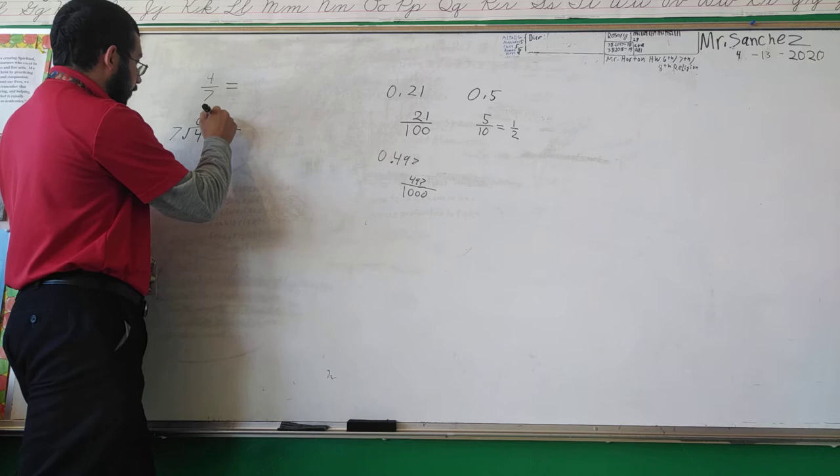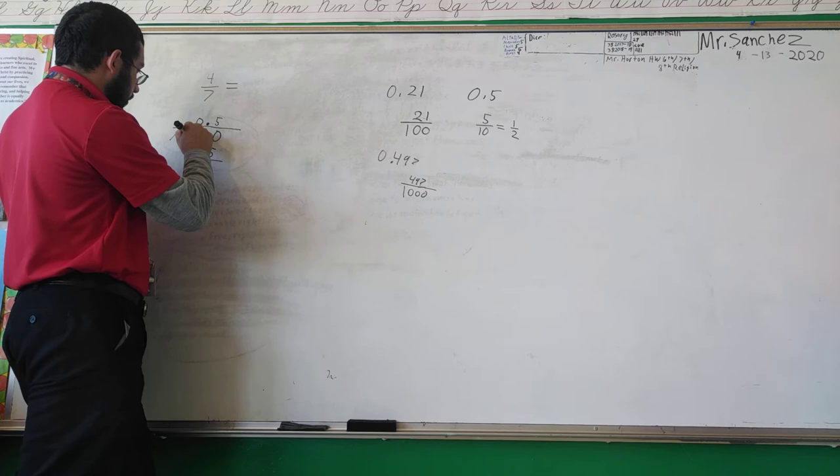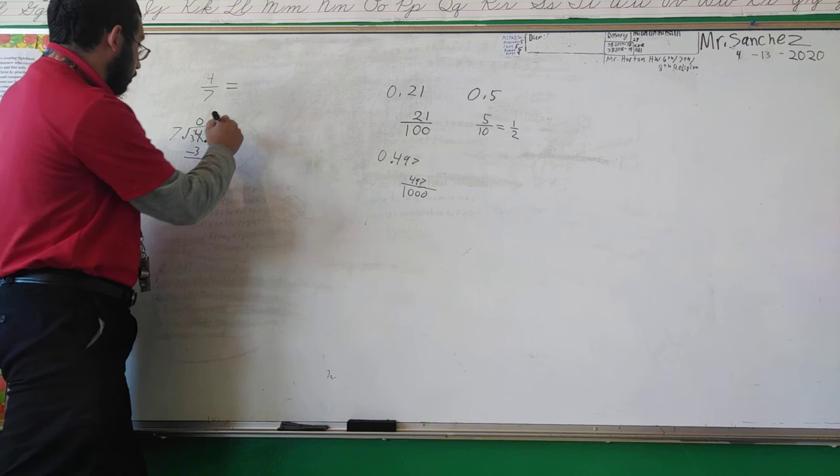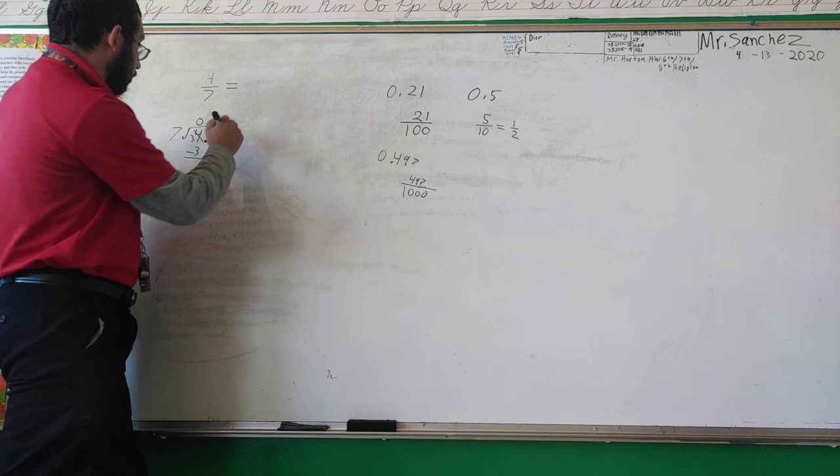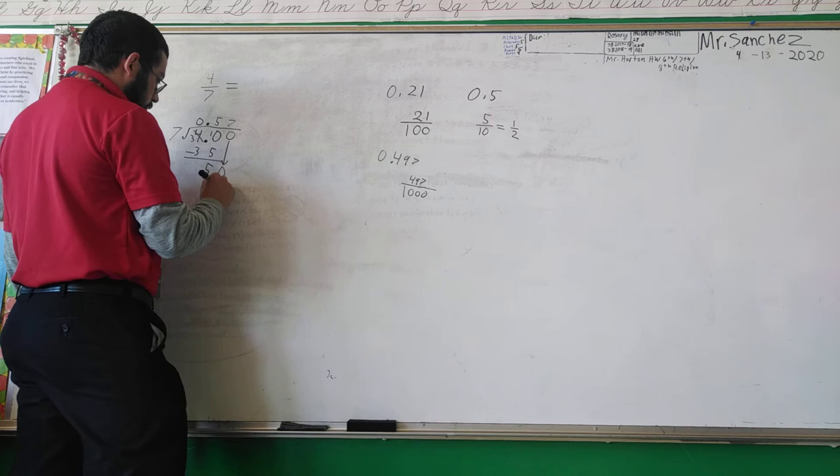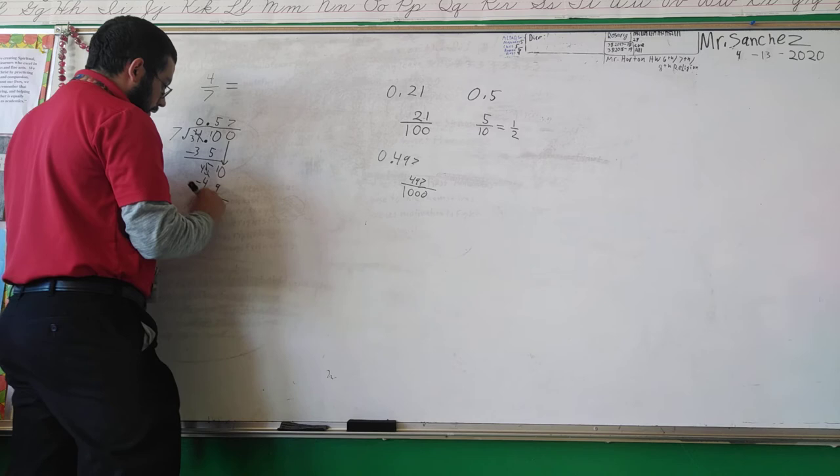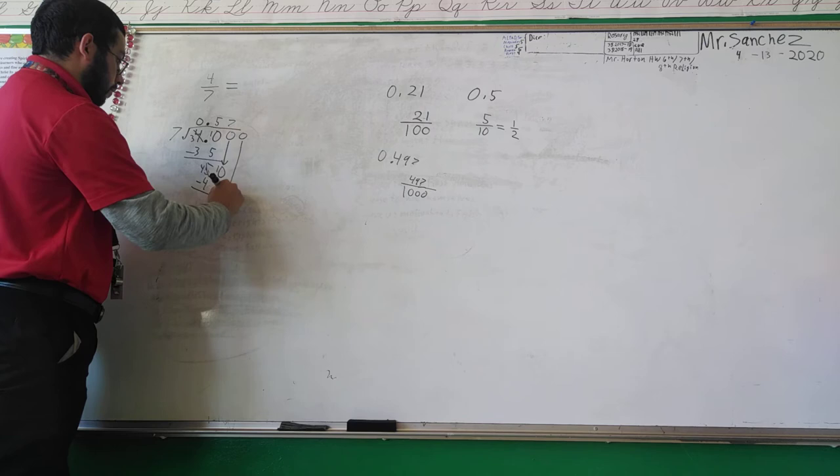Seven would go into here, no, five times. So, thirty-five. We subtract. We're left at five. Seven cannot go into five. So, we have an infinite amount of zeros here. Let's go ahead and put another zero down. I would say seven goes into fifty seven times. So, that would be forty-nine. Subtract that out. And leaves us with one. Now, let's go ahead and add another zero.